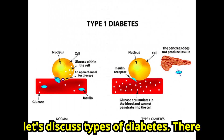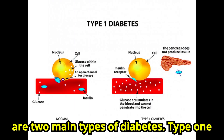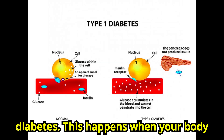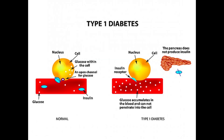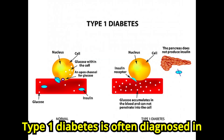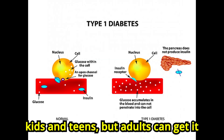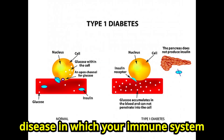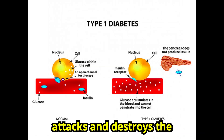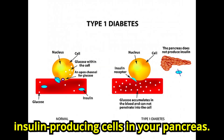Let's discuss types of diabetes. There are two main types. Type 1 diabetes happens when your body stops making insulin completely. Type 1 diabetes is often diagnosed in kids and teens, but adults can get it too. It is an autoimmune disease in which your immune system attacks and destroys the insulin-producing cells in your pancreas.